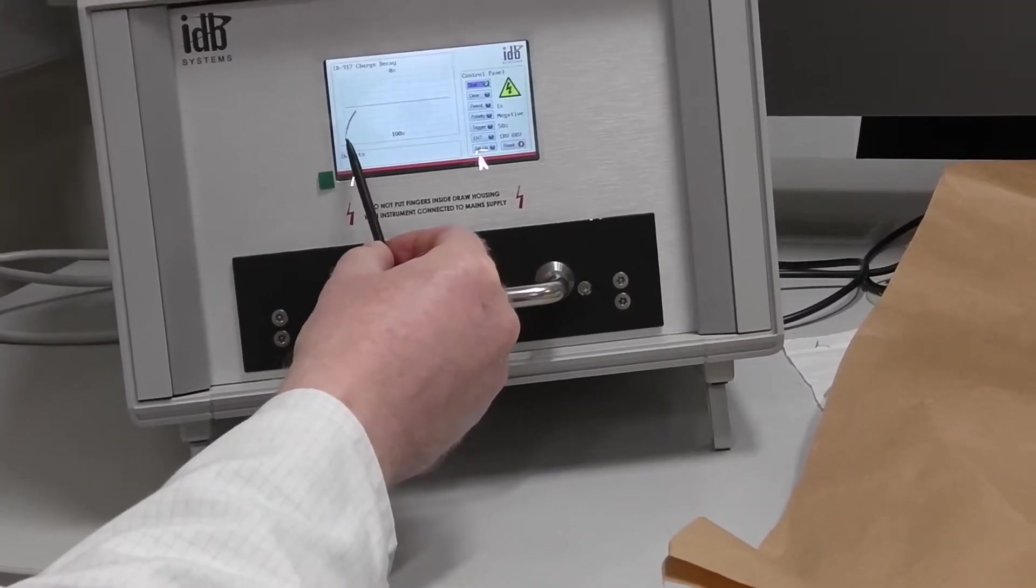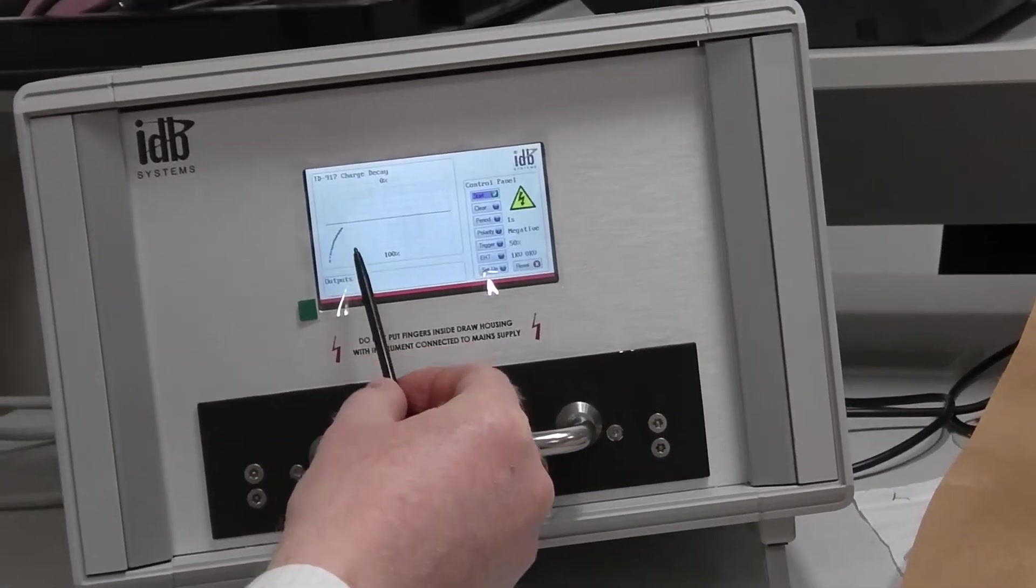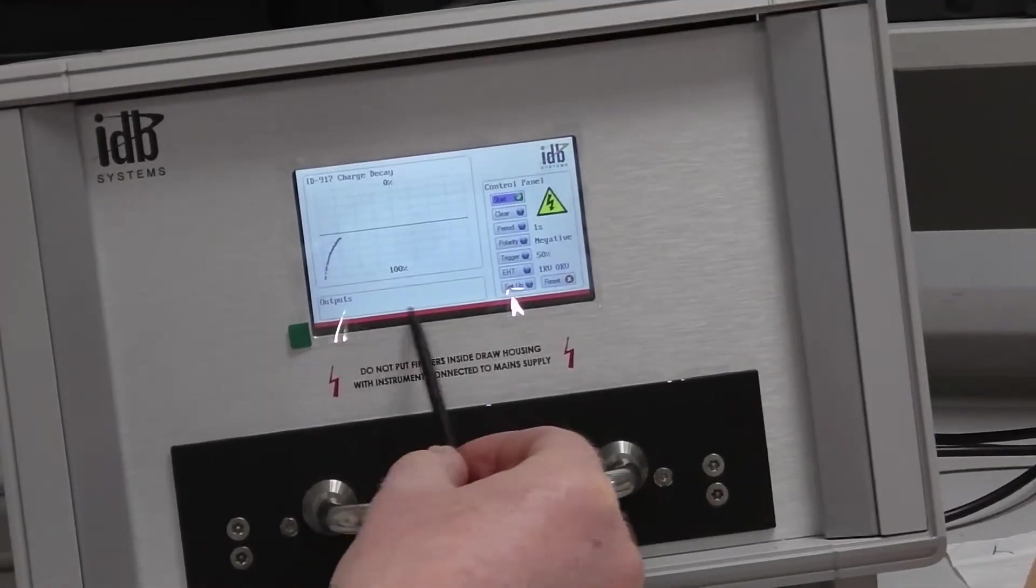At the point that the instrument measures the voltage decay being 50% of what it originally was, that point there is timed and records on the output screen what the measured value is.